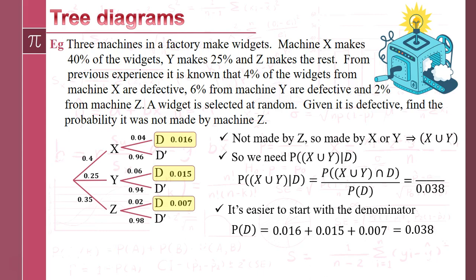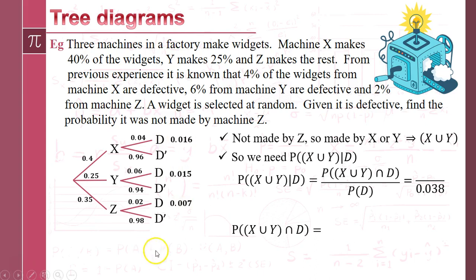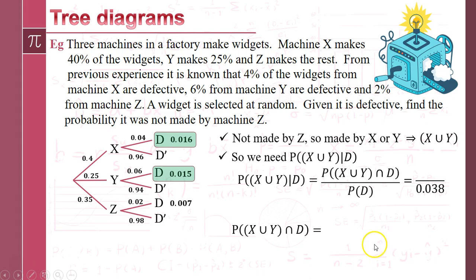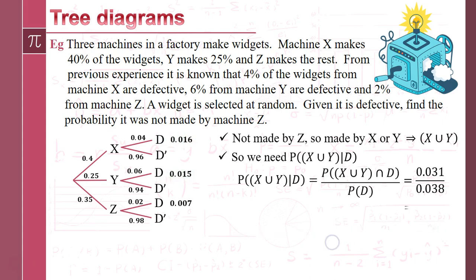That's our denominator sorted. For the numerator, P((X ∪ Y) ∩ defective) means the widget came from machine X or Y, so we take this branch and this branch from the tree diagram and add those two probabilities together to get 0.031. Putting it all together and dividing gives us the answer: the probability it was not made by Z given it's defective is 0.816. Conditional probability on tree diagrams — all done and sorted.